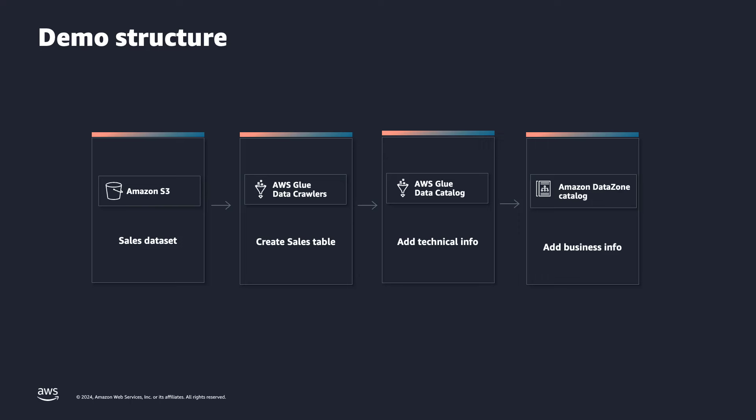Then we are going to run AWS Glue crawlers to infer the schema and create the Glue tables. When we create the Glue tables, we are going to show you the technical metadata that you have available, and also add some information there. After that, we are going to harvest that metadata using Amazon DataZone and add business-related information on top of that data asset. So this is the end-to-end workflow.